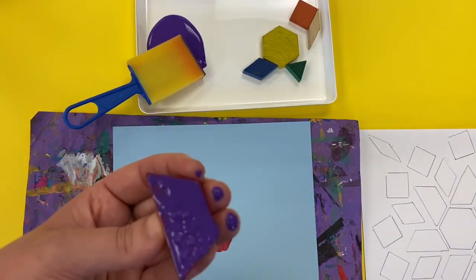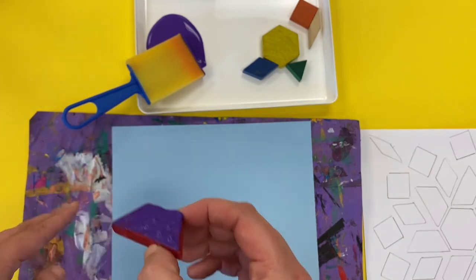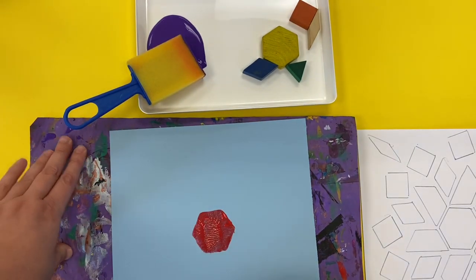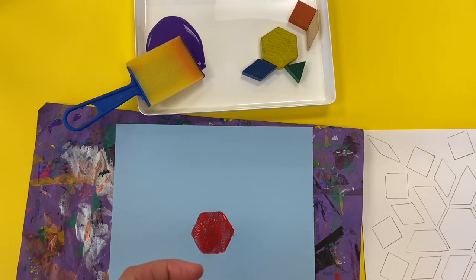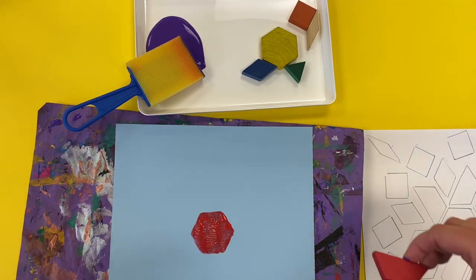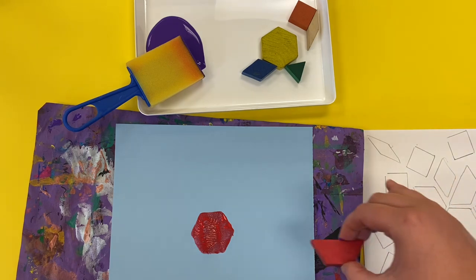If you get a little bit of paint on your fingers, you can always wipe them on like the corner of your messy mat. And then I'm going to line up this shape. I'm looking at my sketch to see where it needs to go.